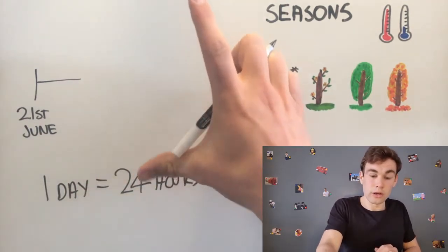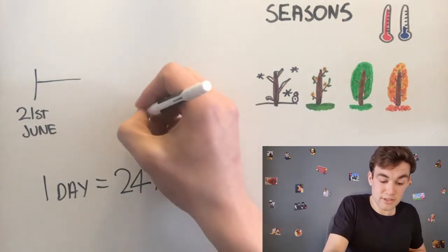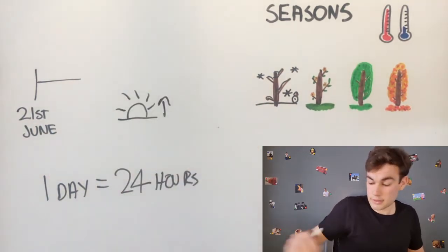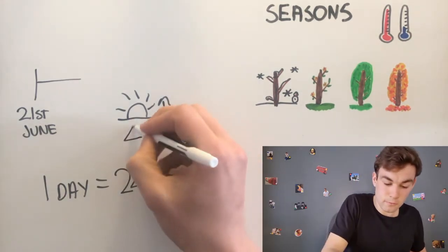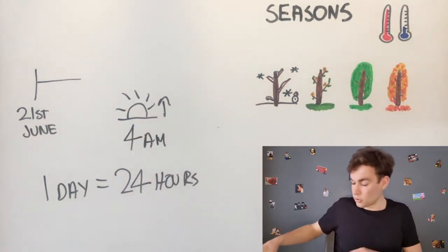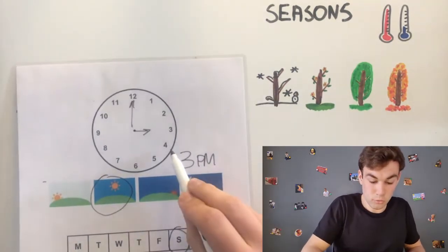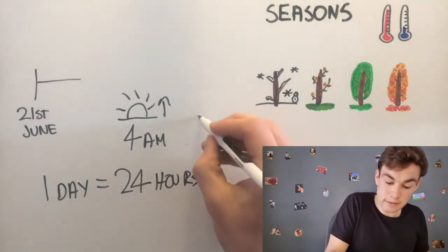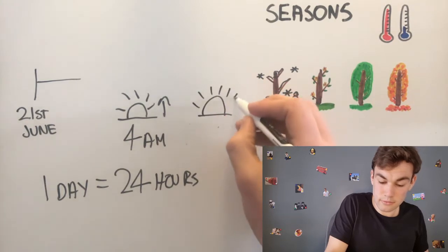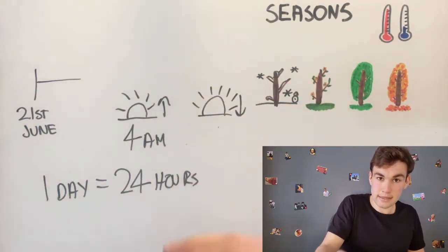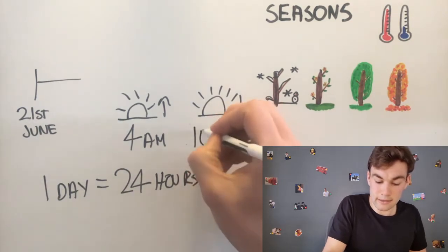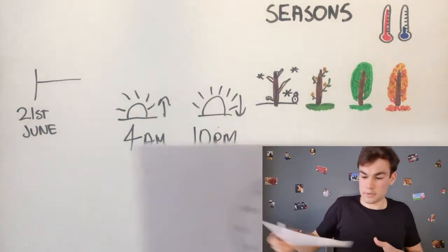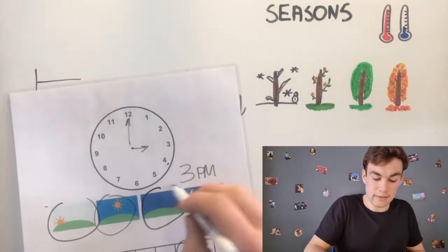And the 21st of June is the longest day. The sun rises at about 4 a.m. or 4 in the morning. The sun sets at about 10 p.m. or 10 in the evening.